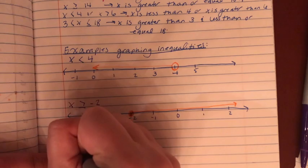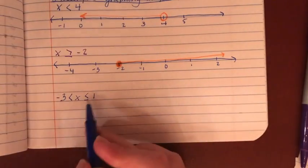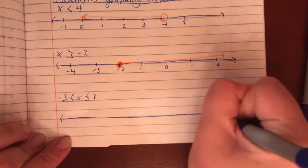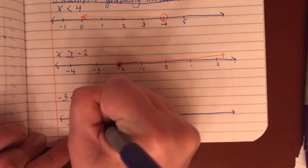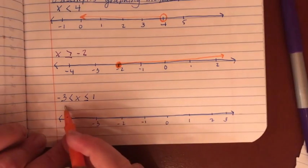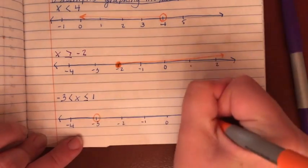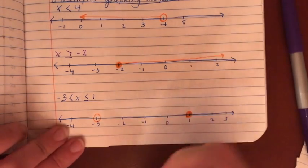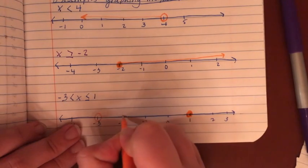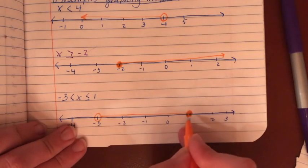Last one: negative three is less than X, and X is less than or equal to one. This says X is greater than negative three and X is less than or equal to one. We draw a number line: negative four, negative three, negative two, negative one, zero, one, two, three. Since there's no 'or equal to' on negative three, put an open circle there. Since it can equal one, put a closed circle above one. X is somewhere in between these two — it cannot be negative three, but it can be one.